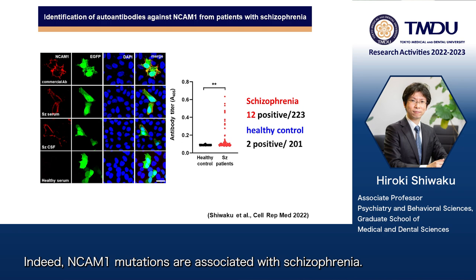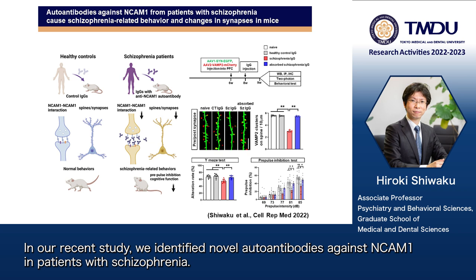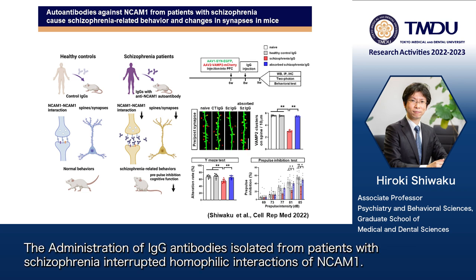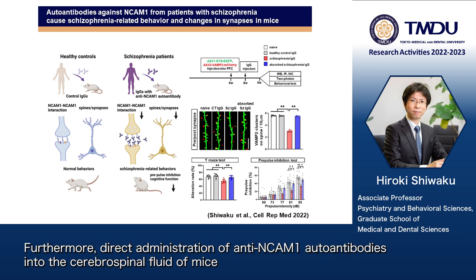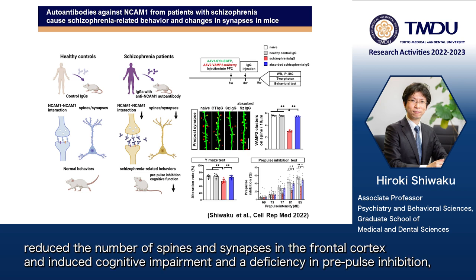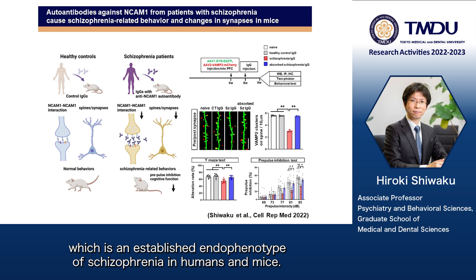NCAM1 mutations are associated with schizophrenia. In a recent study, we identified novel autoantibodies against NCAM1 in patients with schizophrenia. The administration of IgG antibodies isolated from patients with schizophrenia interrupted homophilic interactions of NCAM1. Furthermore, direct administration of anti-NCAM1 autoantibodies into the cerebrospinal fluid of mice reduced the number of spines and synapses in the frontal cortex and induced cognitive impairments and deficiency in prepulse inhibition, which is an established endophenotype of schizophrenia in humans and mice.